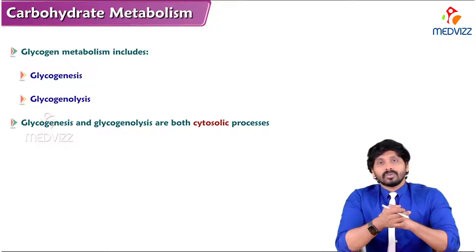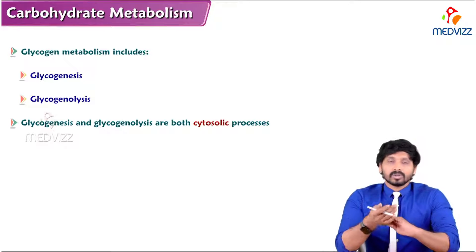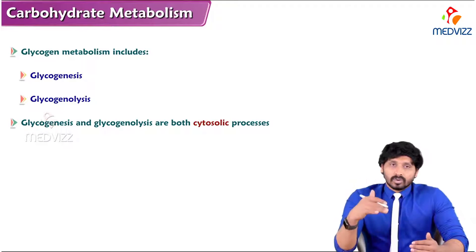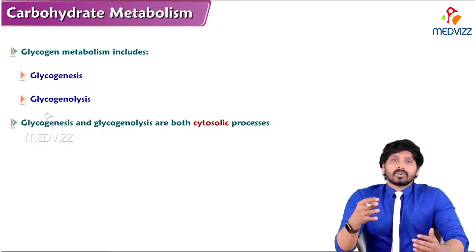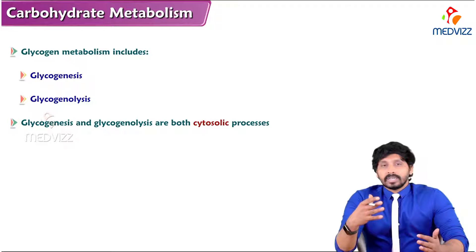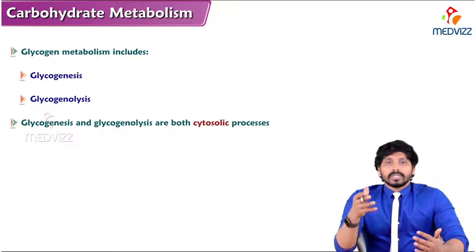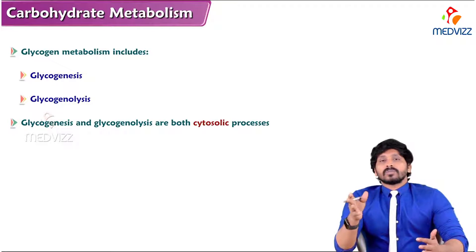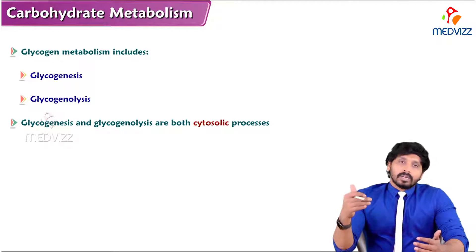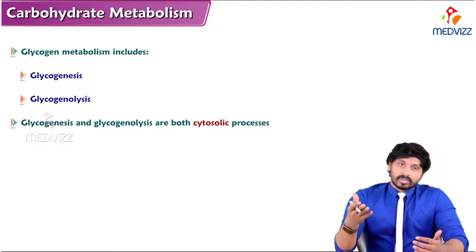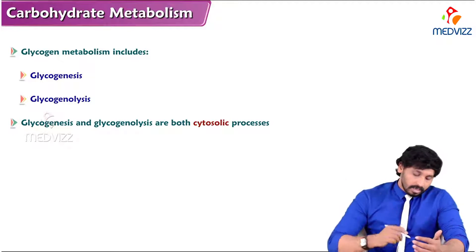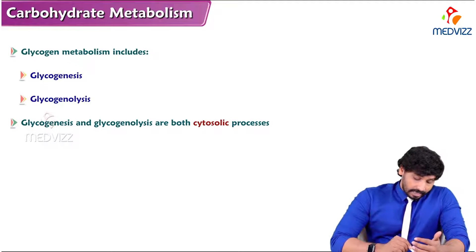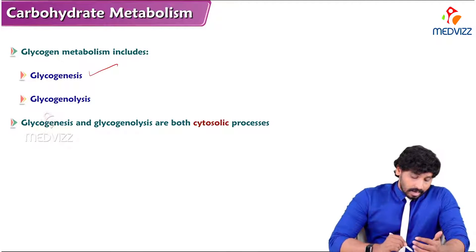Glycogen metabolism includes two things: anabolism and catabolism. Glycogen is synthesized and stored in the body — that is anabolism. In case of emergency or starvation, when glucose is needed, the stored glycogen is broken down to form free glucose molecules sent to circulation — that is catabolism. The anabolic aspect is called glycogenesis, and the catabolic aspect is glycogenolysis.